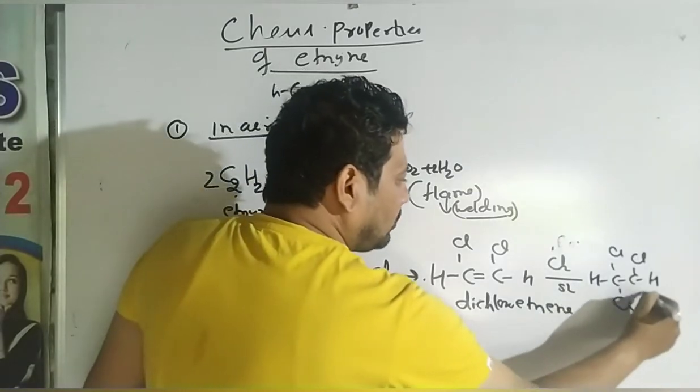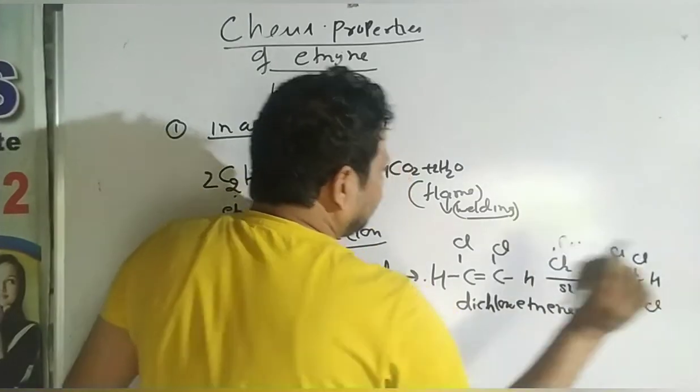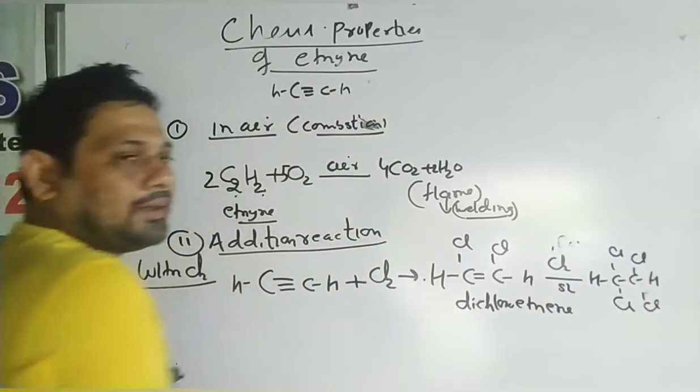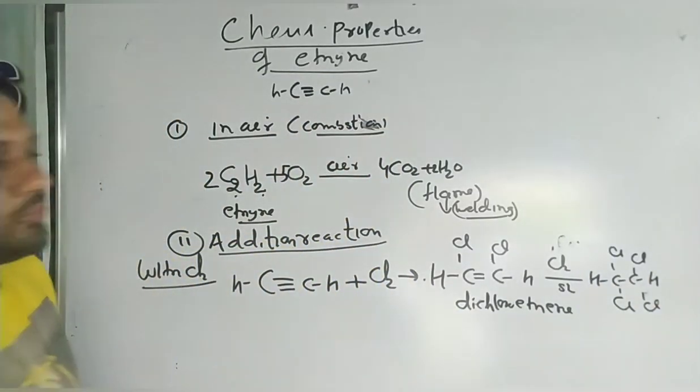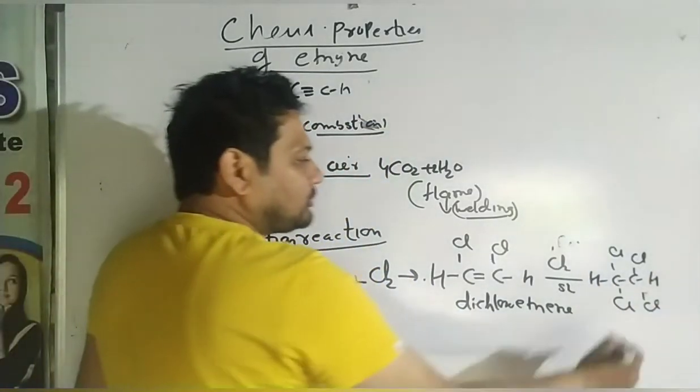In the addition reaction with chlorine: two chlorines are added step by step. First the triple bond becomes a double bond, then the double bond becomes a single bond. The product with four chlorines is tetrachloroethane.